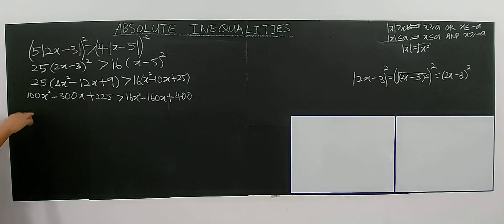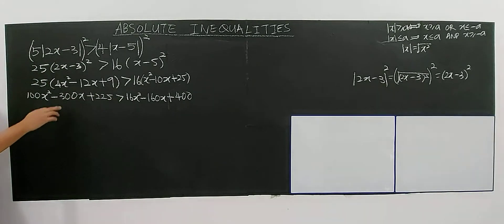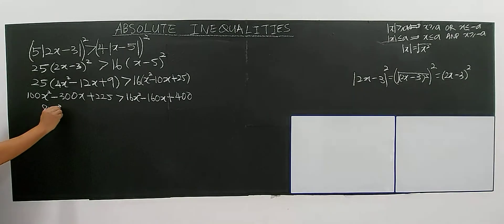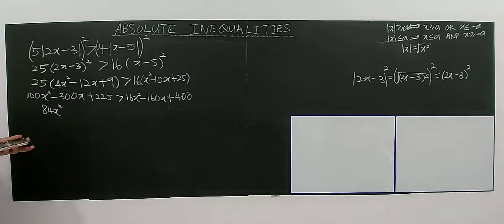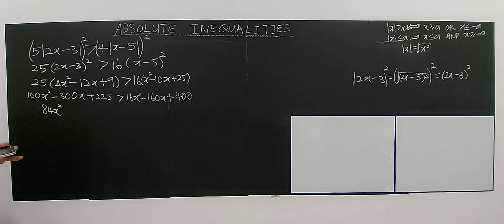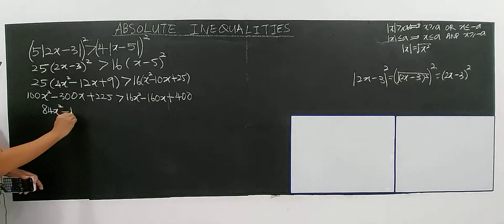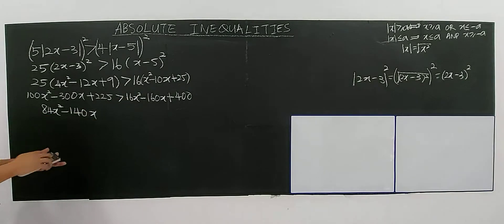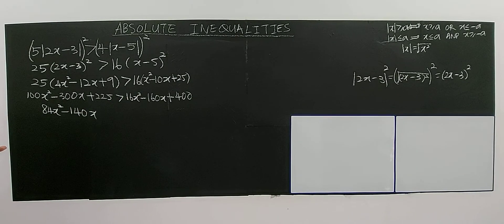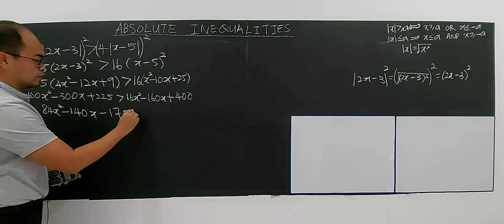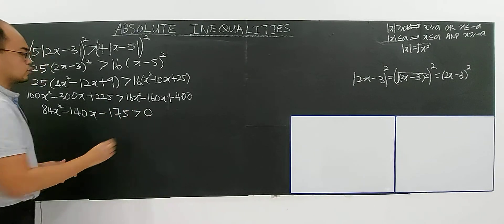So I bring everything over to the right-hand side. 100x squared minus 16x squared, 100 minus 16 you have 84x to the power of 2. Negative 300 plus 160 you have negative 140x. 225 minus 400 you have negative 175, greater than 0.